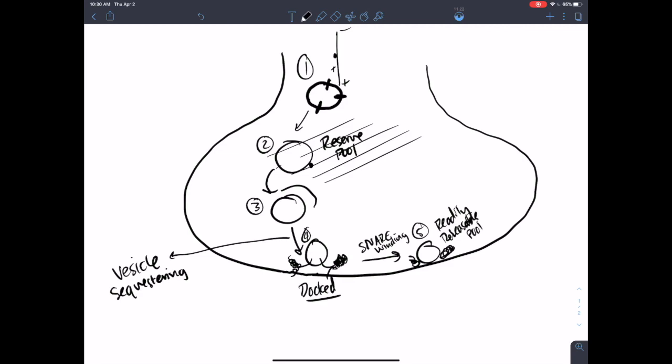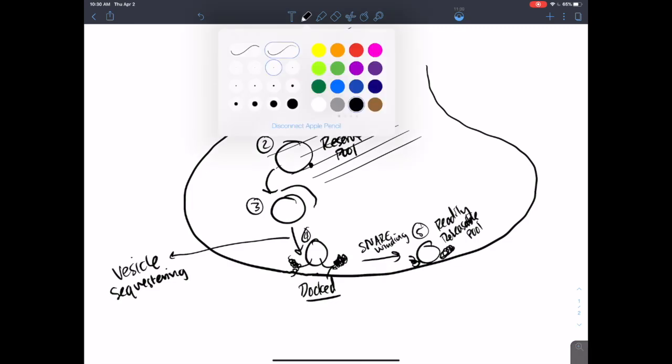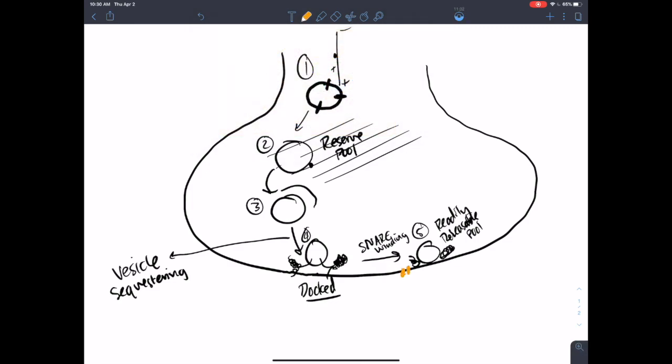At which point a neurotransmitter coming in here, or sorry, an action potential invading this terminal is going to lead to the influx of calcium via voltage-gated calcium channels that are, again, sequestered pretty close to this synaptic vesicle and all these SNARE complexes. Binds to calcium entry, binds to something called synaptotagmin. So write that, synaptotagmin.